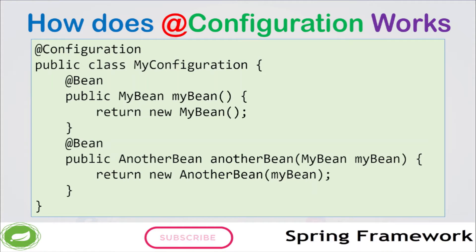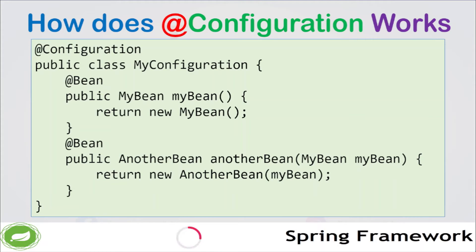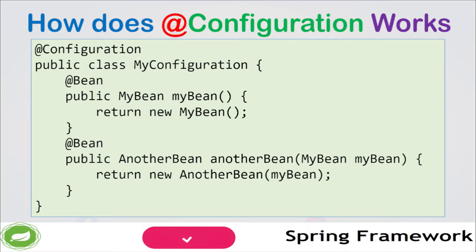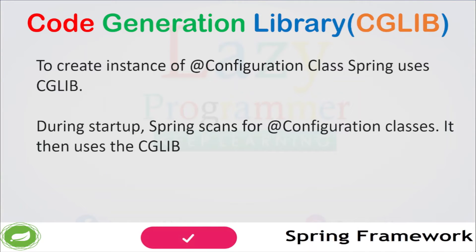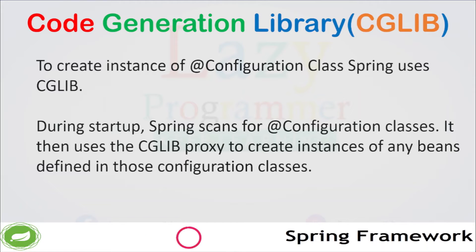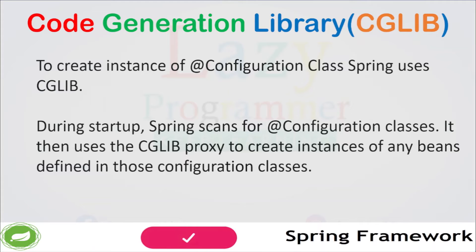myBean is a simple bean that does not depend on any other bean, while anotherBean depends on myBean itself. So when Spring creates an instance of anotherBean, it will inject an instance of myBean into its constructor. Internally, when a class is annotated with @Configuration, Spring creates a bean definition for that class — a blueprint for creating instances of those classes, including any dependencies. To create an instance of a @Configuration class, Spring uses a special internal mechanism called CGLib proxy, which stands for Code Generation Library proxy.